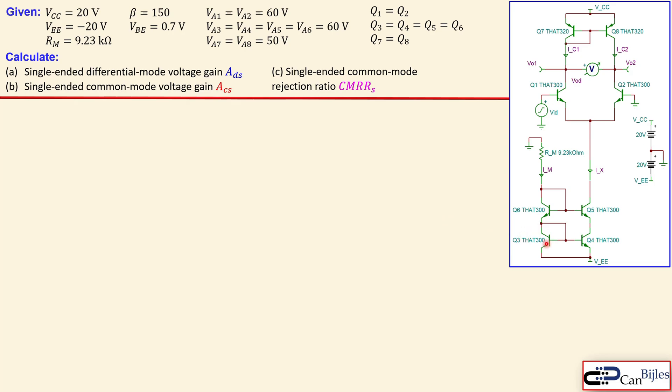So these four make up this cascode including this resistor and the differential pair is formed by the Q1 and Q2 and then like I said before Q7 and Q8 is for the active loading. The values for the VCC -VE are shown here and also the RM the beta for all transistors are 150 and also the base emitter junctions also the emitter base junctions for the PNP variations are 0.7. The early voltages for the NPN transistor is 60 volts and for the PNP it is 50 volts.